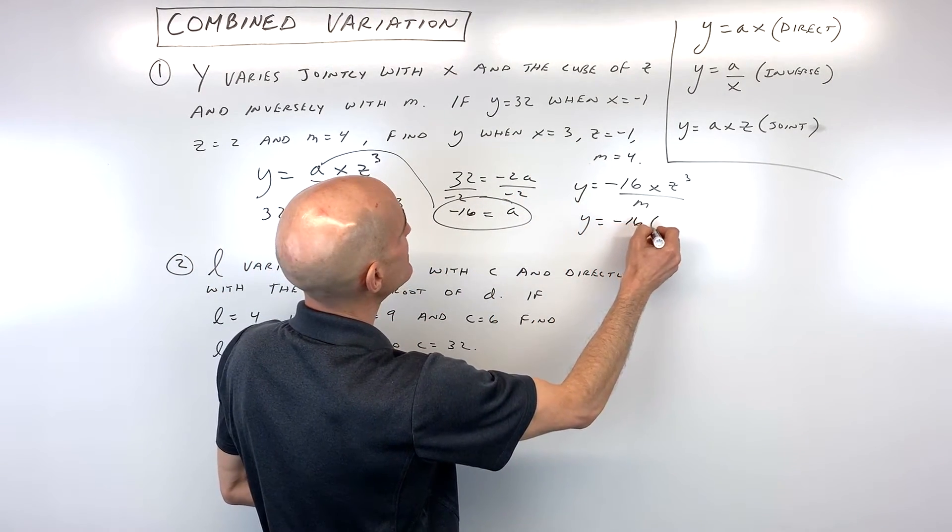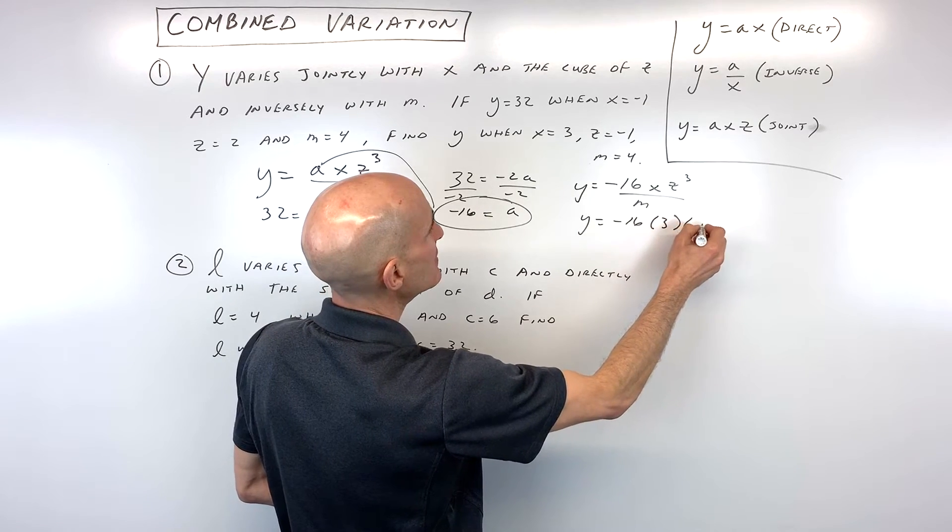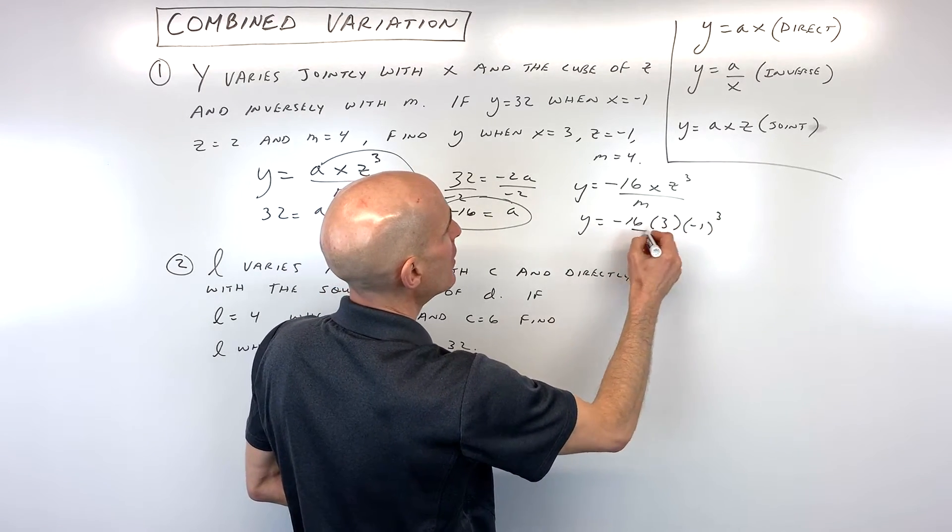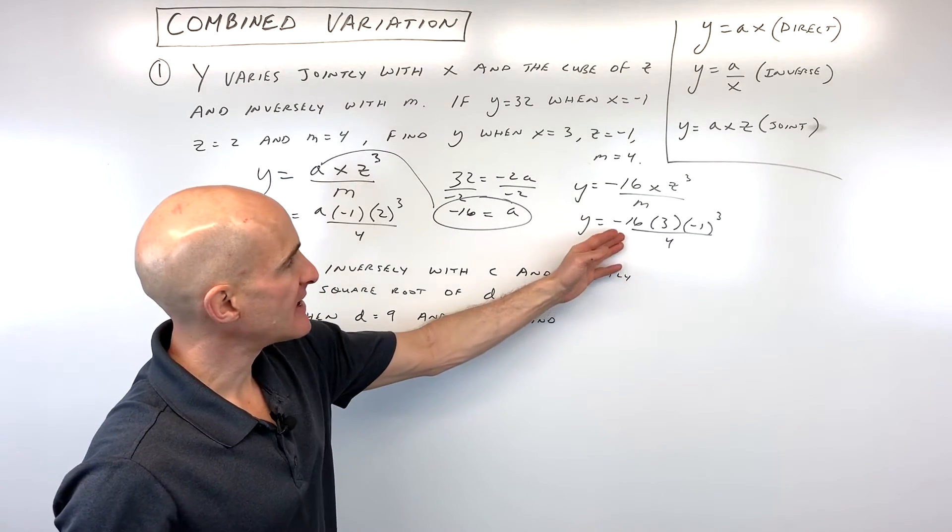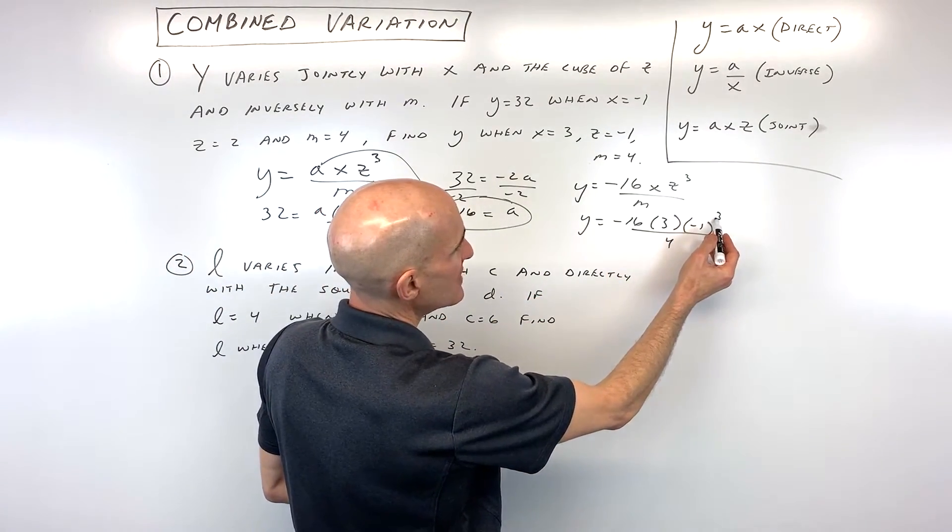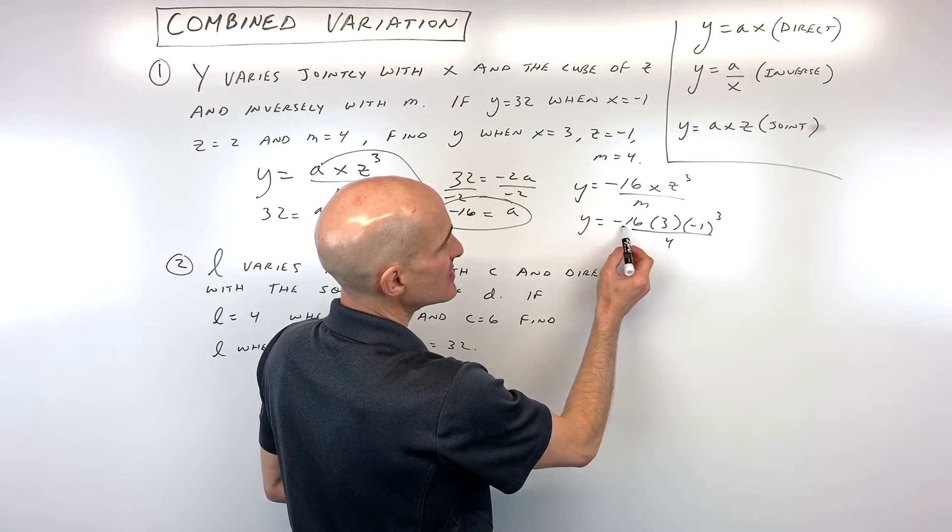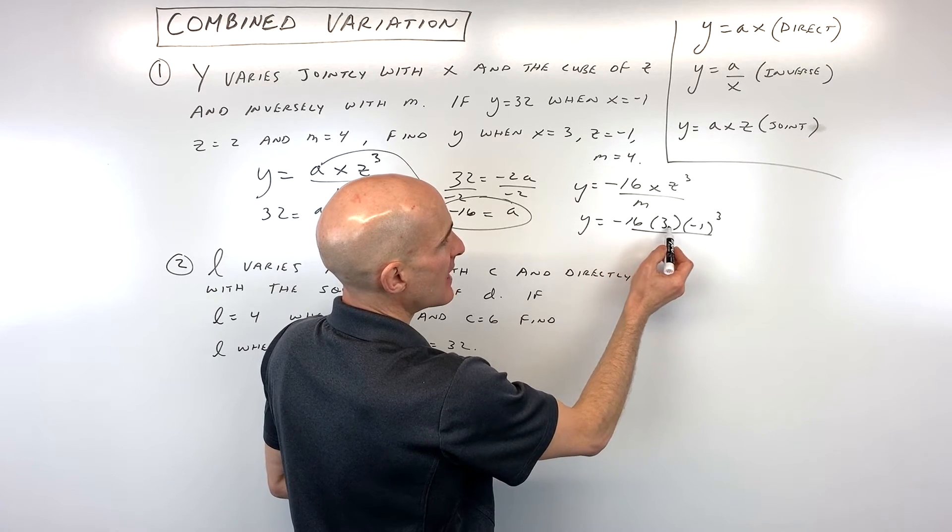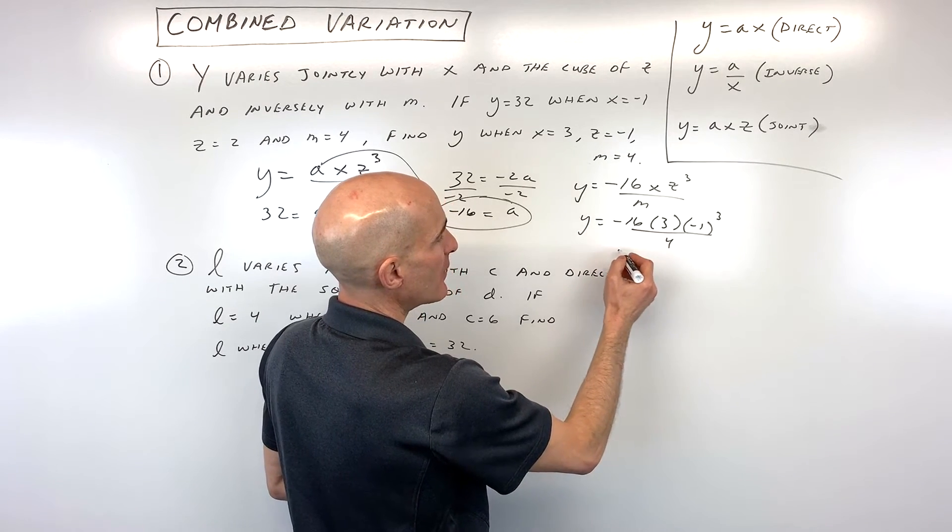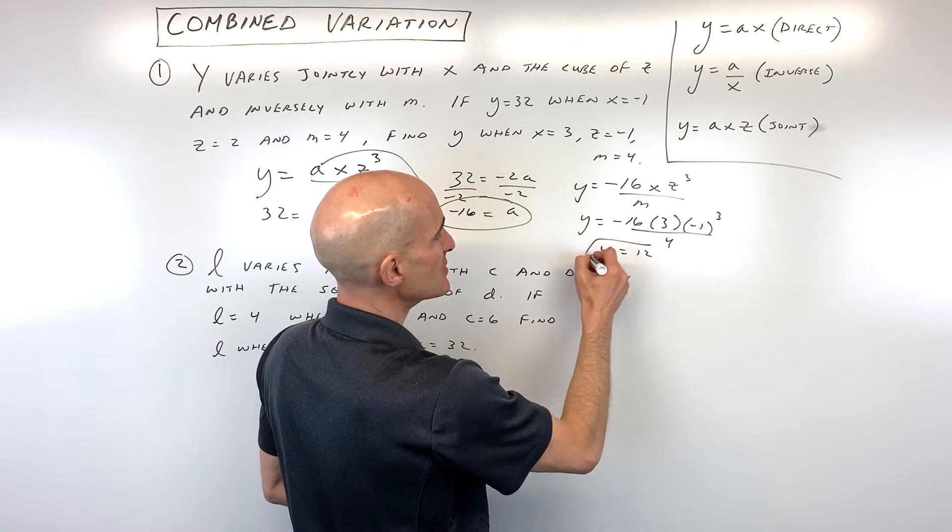So we're just gonna substitute these values in now. You can see this is gonna be negative 16 times three times negative one cubed, all divided by four. So if we simplify that down, we get negative one cubed is negative one, times negative 16 is positive 16, times three is 48, divided by four is 12. So you can see y equals 12.